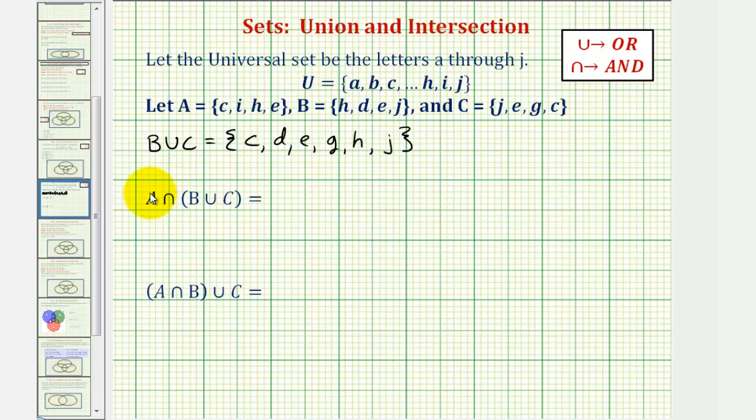So now we want to find the intersection of A and this set. Let's list it out. The elements in A in alphabetical order would be C, E, H, I. We're going to intersect this with B union C,